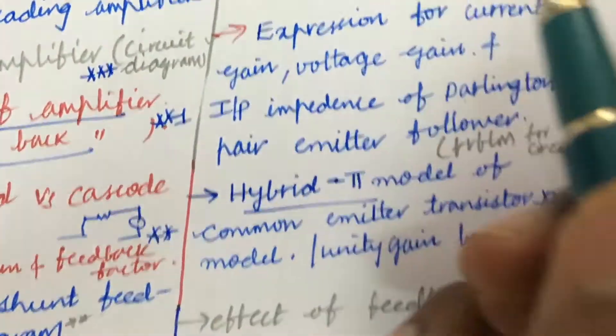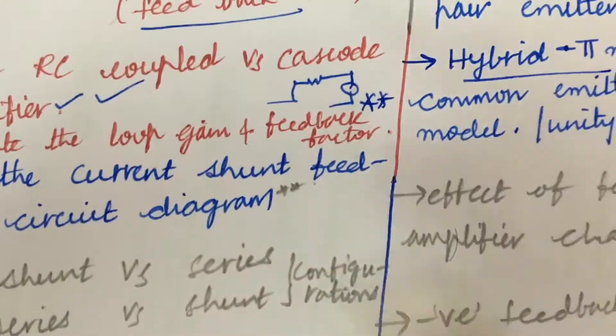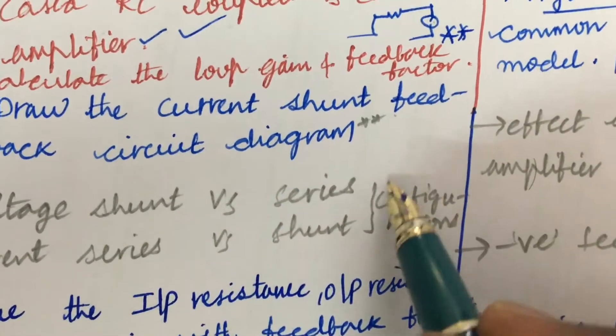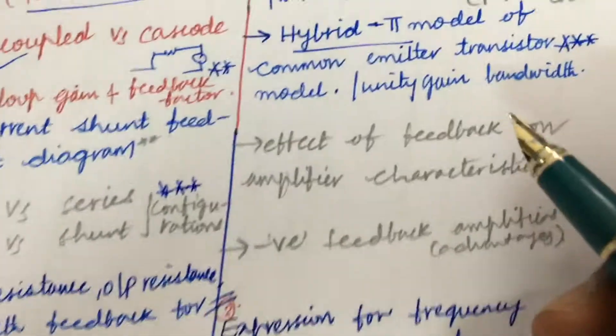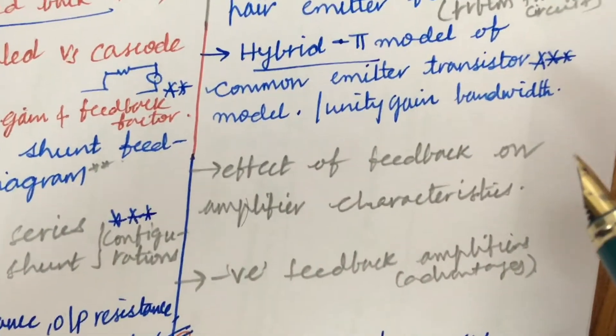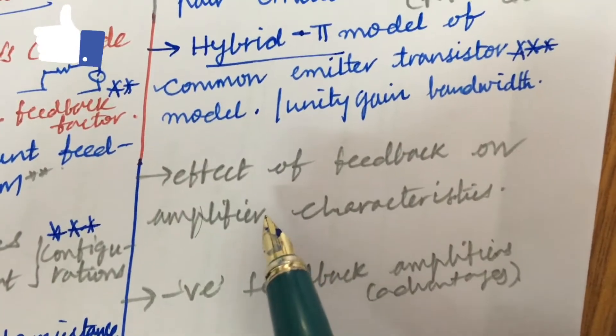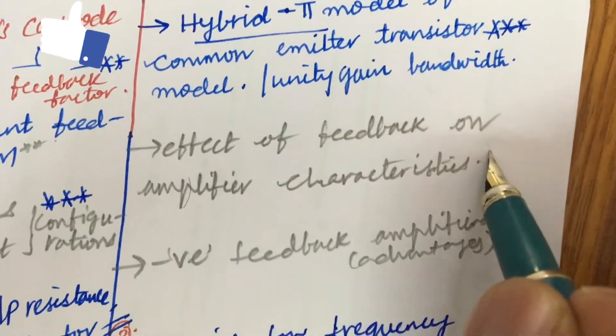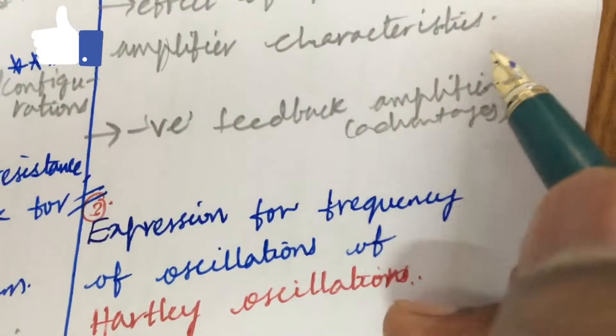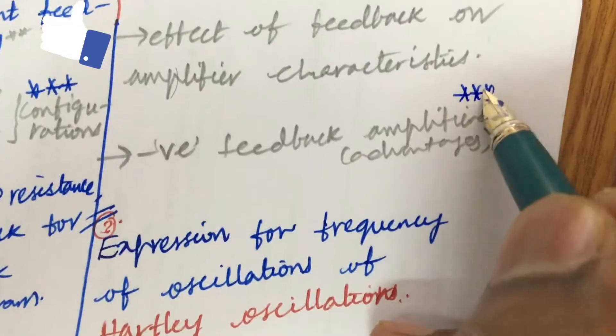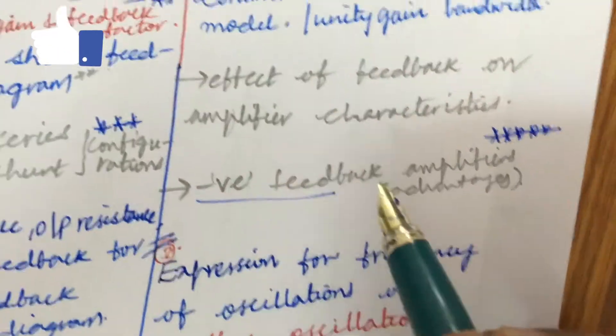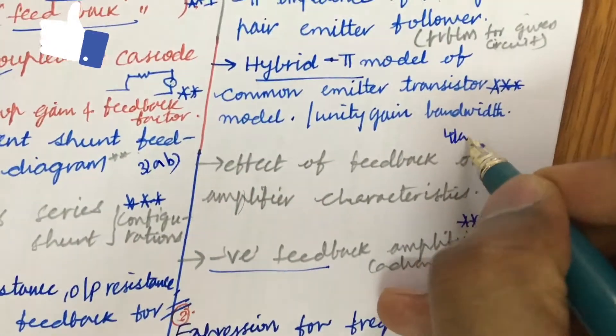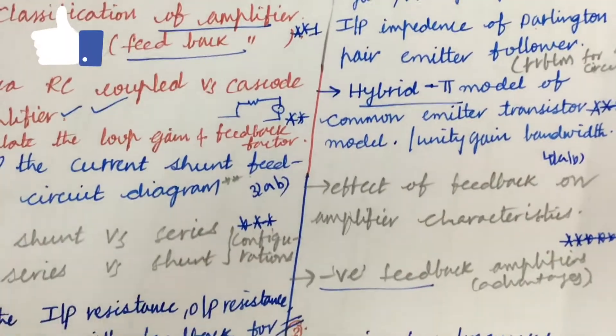Later, the voltage shunt versus series and current series versus shunt configurations may be also one of the very important questions. I have come up only with few questions here and not the complete syllabus to concentrate. All the seven questions which I am going to let you know - effect of feedback on amplifier characteristics as well as negative feedback amplifier advantage. I have taken into consideration here why, because this is very very important and gunshot related to negative feedback. From this part you will be getting 3a as well as 3b and 4a as well as 4b. Please thumbs up to my videos as well as concentrate on each and every part.